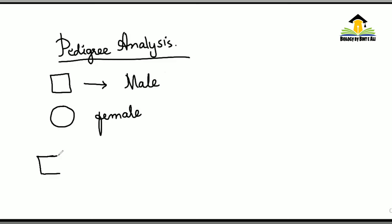Jab male or female ke darmiyan ek horizontal line hoti hai, this line expresses the marriage. When there is a vertical line, this shows offspring. This vertical line indicates individual offspring. It might be daughter or might be son.